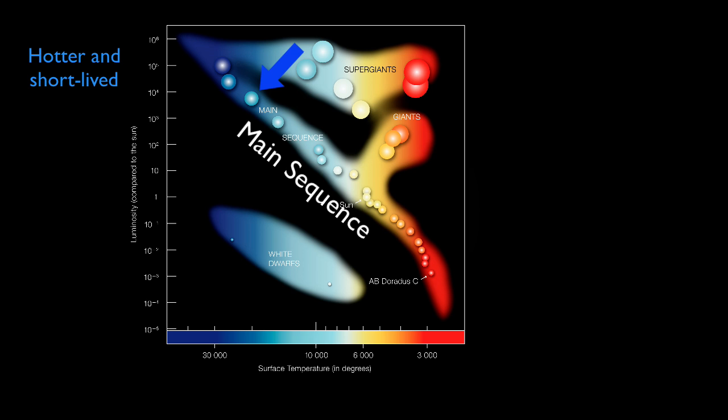So these heavier stars are hotter, which is why they appear blue. They burn through their fuel quickly, which means they don't survive for as long as the lower mass stars. Their ages are measured in terms of millions of years, not billions.